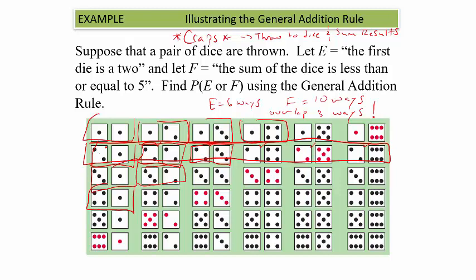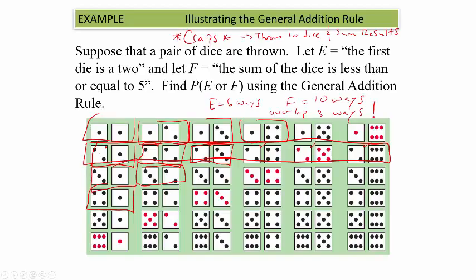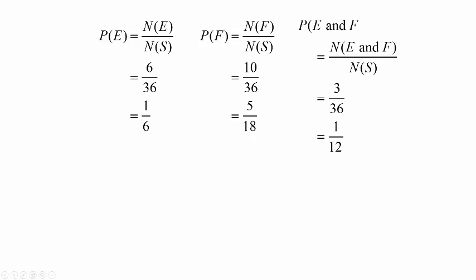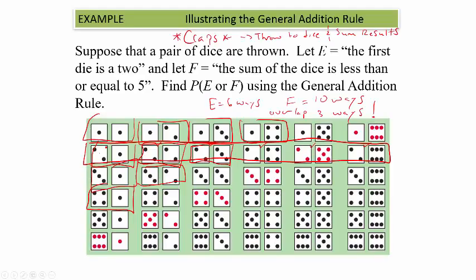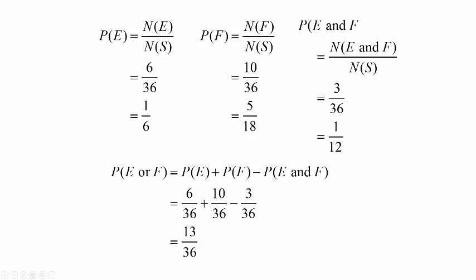Using the general addition rule to find P(E or F): P(E) = 6/36, P(F) = 10/36, and P(E and F) = 3/36. So P(E or F) = 6/36 + 10/36 − 3/36 = 13/36. Six plus ten is 16, minus three gives 13.